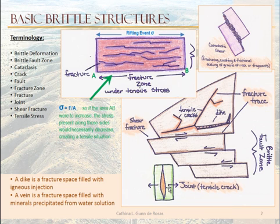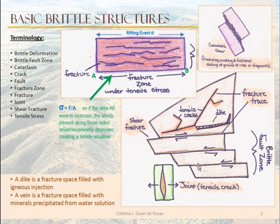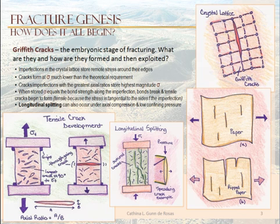We also talk about dikes and veins. Dikes are fractures, faults, or joints that are filled with igneous material — igneous injection. We call it a vein when that same space is filled with mineral precipitated from a water solution. We can look at these pictures to get ourselves an idea of the terminology, and then we can ask ourselves: how does this brittle fracturing, breaking, faulting, and jointing actually occur? What causes this to happen?